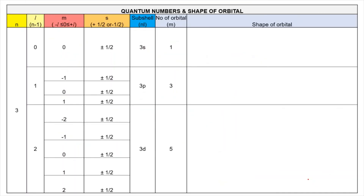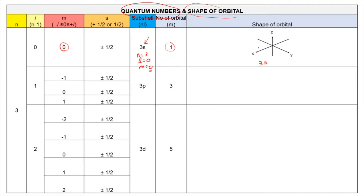Let us now connect the quantum numbers from the previous video with the orbital shapes we just learned. For n equal to 3, l equal to 0, m equal to 0, we have one orbital, which is the 3s. Draw the X, Y, and Z axes and then draw a large sphere to show the higher energy level.